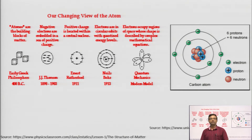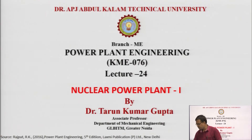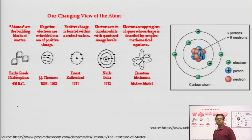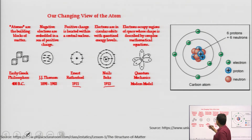Our changing view about the atom as the building block of matter was the early Greek philosophy. The next theory was given by J.J. Thomson in 1898 to 1903 — he said negative electrons are embedded in a sea of positive charge. Then there was the Rutherford model in 1911, where he said positive charge is located within a central nucleus, and electrons are in circular orbits with quantized energy levels.